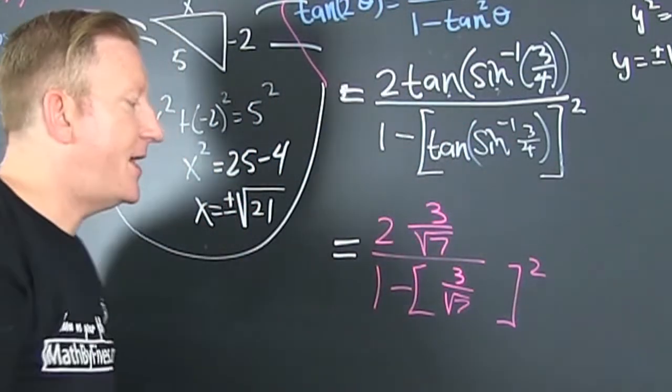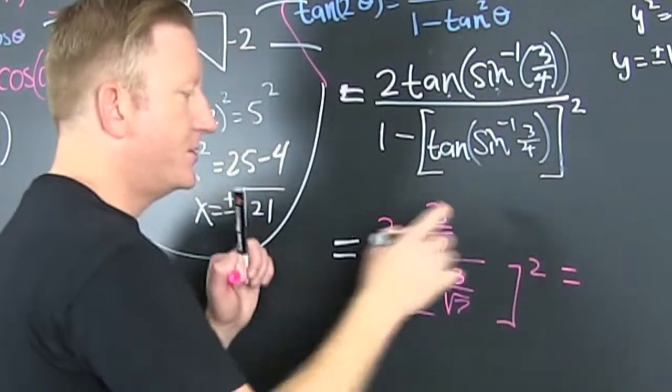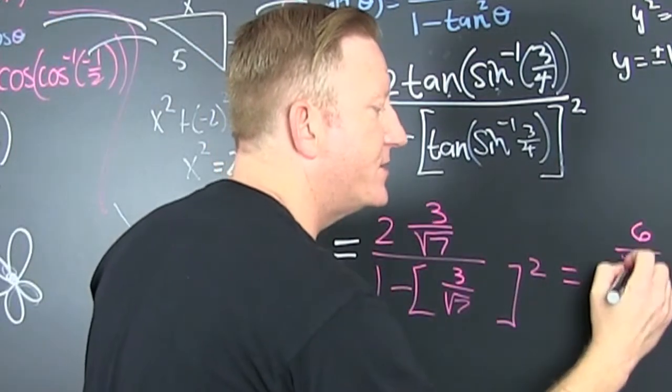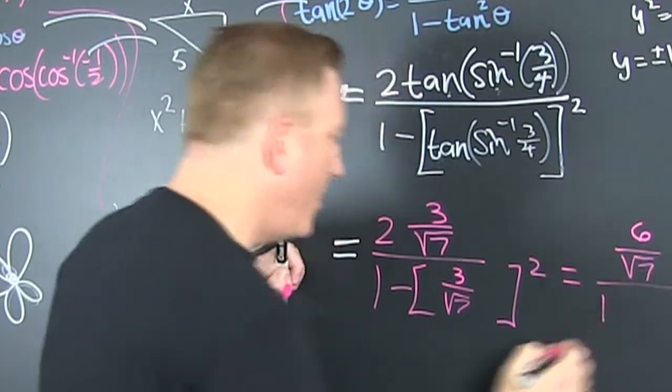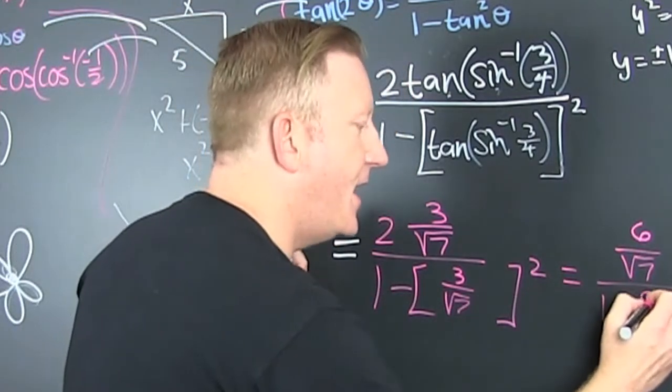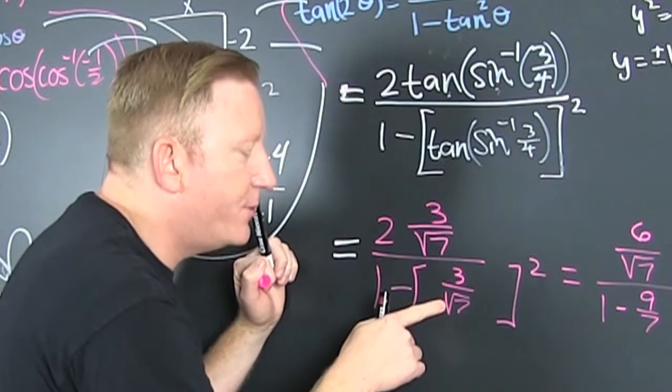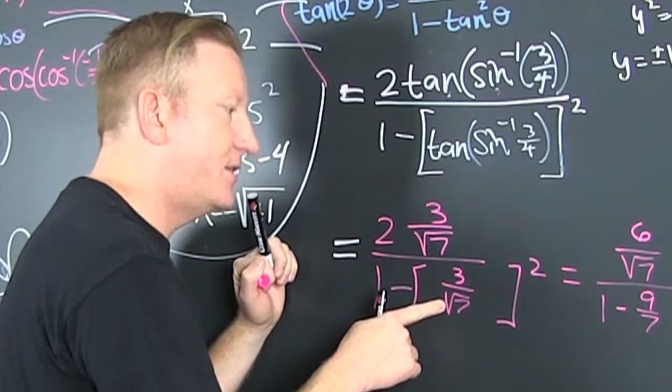Now we're going to square things, and we're going to do some algebra, so then here we go. So all right. That's six over the square root of seven divided by one minus nine over seven. Why? Because three squared is nine, and root seven squared is seven.